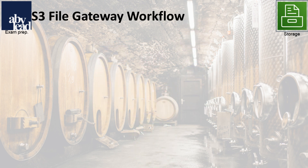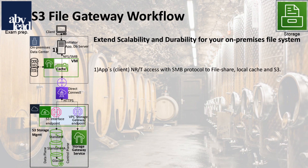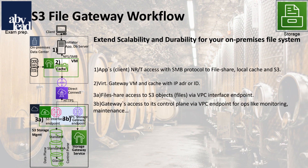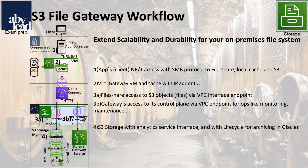If you want to archive files in S3 Glacier, take the following steps. First, your app gets access to your virtual gateway machine in your local data center. With it, the file share, the local cache, and S3 are all available in real-time. Next, you privately connect one VPC endpoint for S3 and another VPC endpoint for the gateway control plane. Last but not least, you have access to four S3 storage classes with its backup and archiving.